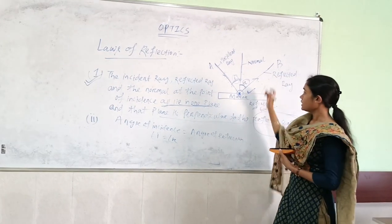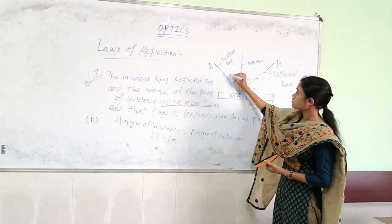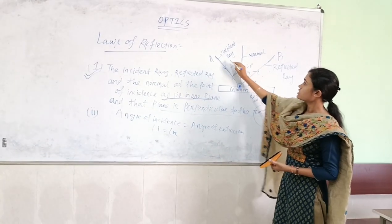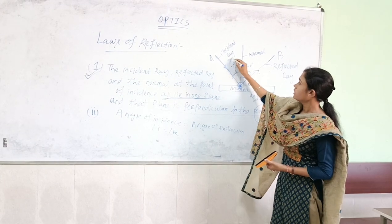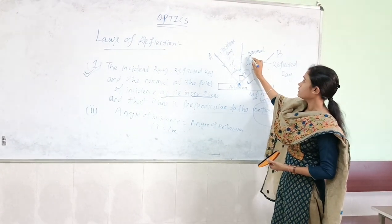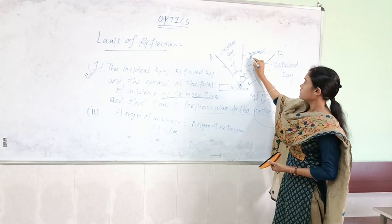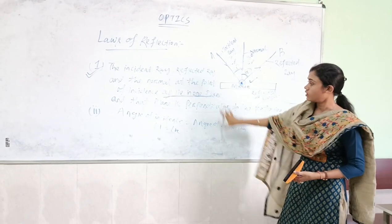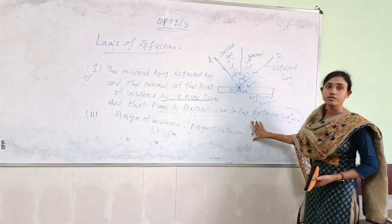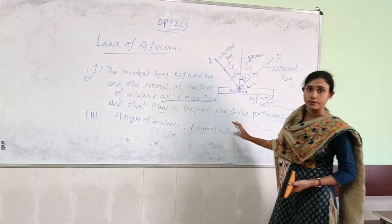For example, if the angle of incidence I equals 60 degrees, then the angle of reflection will also be 60 degrees. If it is 40 degrees, then the reflected angle will also be 40 degrees. These two laws are the laws of reflection.